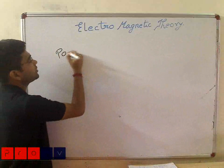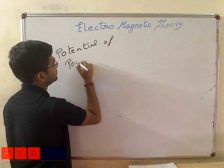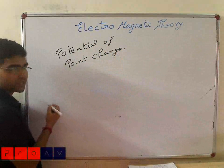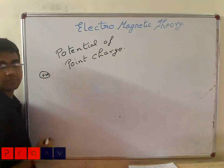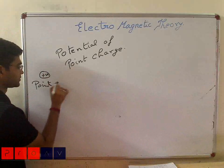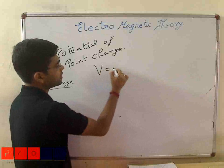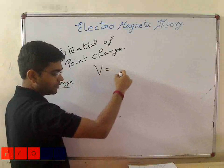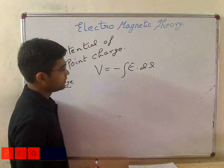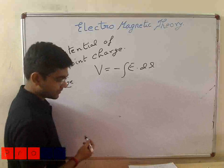Now let us come to something called the potential of a point charge. What is the potential of a point charge? We know V is equal to, depending upon the direction, minus the integral of E dot dr — because we do work against the direction of the electric field when moving against it. So V = −∫E·dr. Now let us substitute the value of E: E = Q / (4πε₀r²).